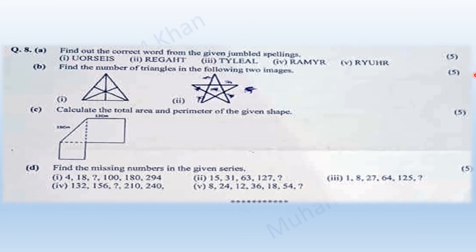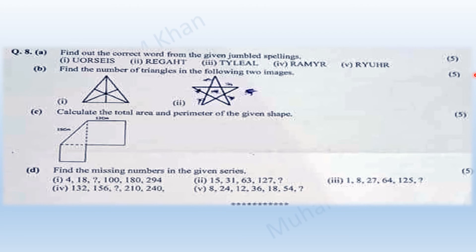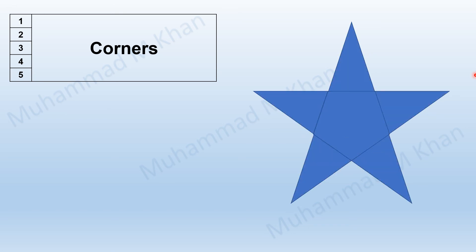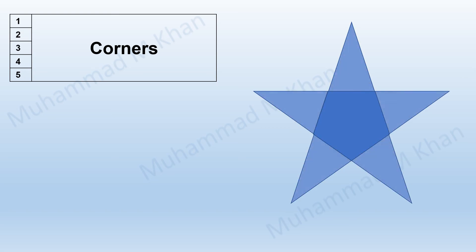Moving on to the next image: it was a star with a pentagon in the center. Every corner of the star is a triangle itself, so five corners represent five triangles. Next, we start joining other segments with each corner of the star to find how many additional triangles there are.